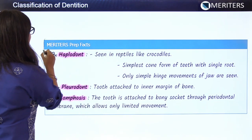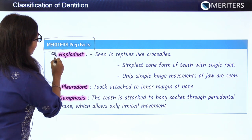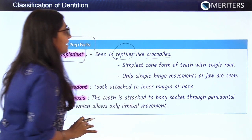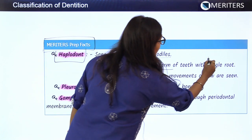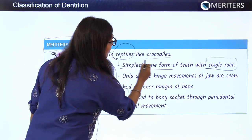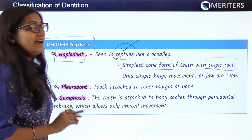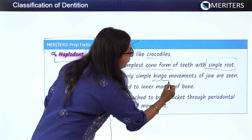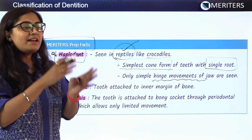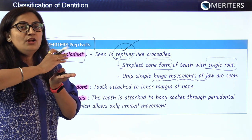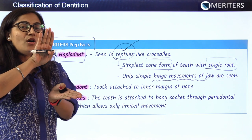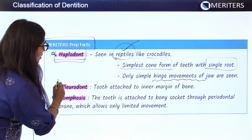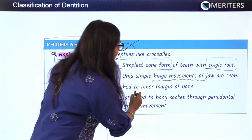Now some prep facts for exam edge: haplodont is seen in reptiles like crocodiles — the simplest cone form of teeth with a single root. Only one kind of jaw movement is possible in haplodont: the hinge movement, which is just opening and closing around one fulcrum. Then comes pleurodont teeth — their attachment is to the inner margin of the bone.